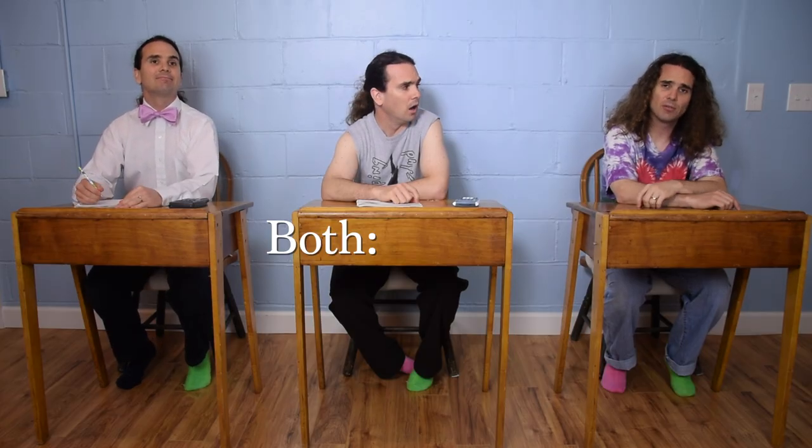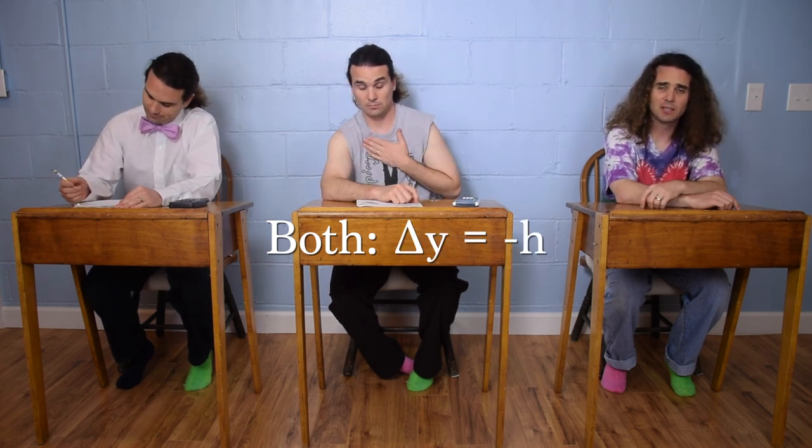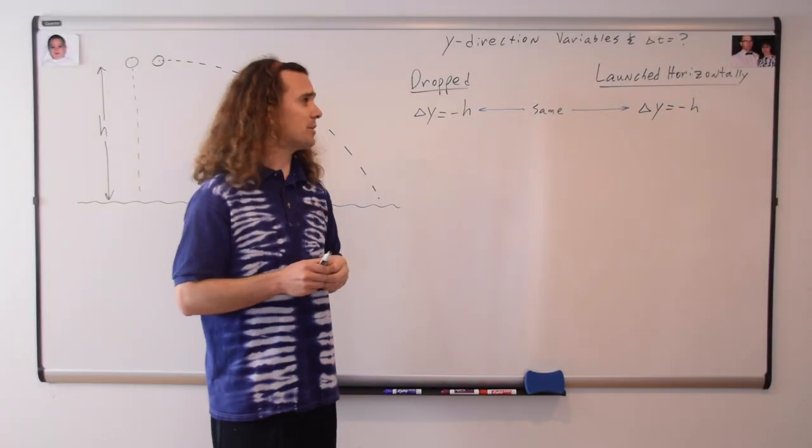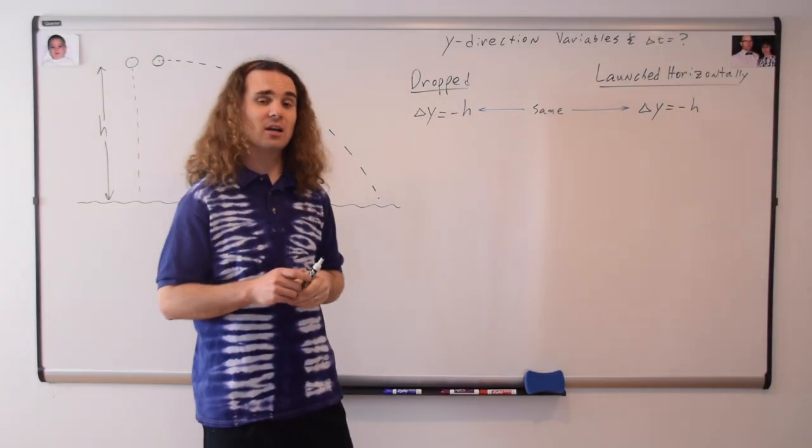The displacement in the y direction for both is h. Oh, negative. Negative. Yeah, negative h because they're both going down. And notice that this is the same for both the one that was dropped and the one that was launched horizontally.